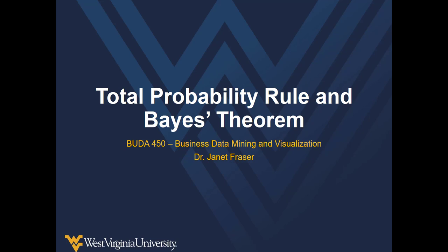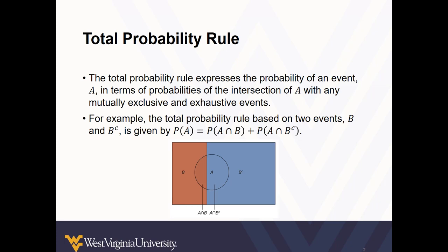Let's talk about the total probability rule and walk through a few examples of Bayes' Theorem. The total probability rule expresses the probability of an event A in terms of probabilities of the intersection of A with any mutually exclusive and exhaustive events. For example, based on two events B and the complement of B, the probability of A is calculated as the probability of the intersection of A and B, and A and B complement, as illustrated on the slide.